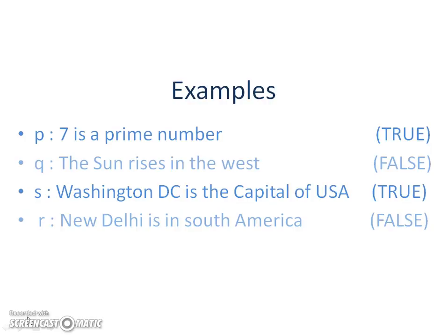Except for the fact that if the Earth starts rotating in the opposite direction, which is currently impossible. Now moving forward, S is a statement which tells us that Washington DC is the capital of USA, which is true.